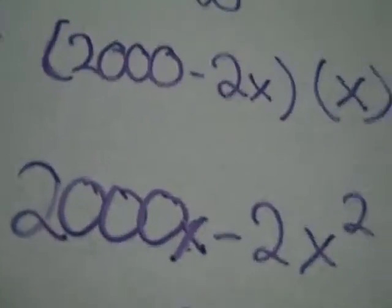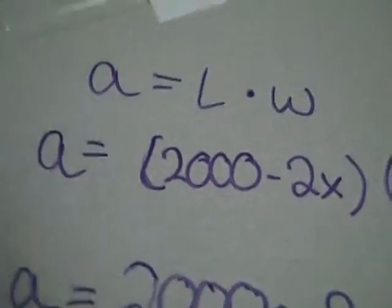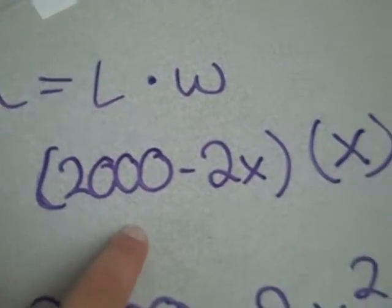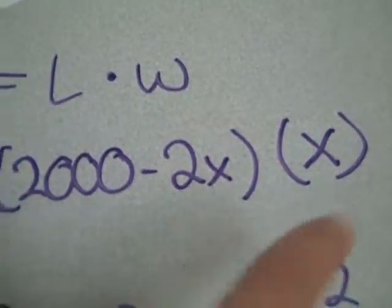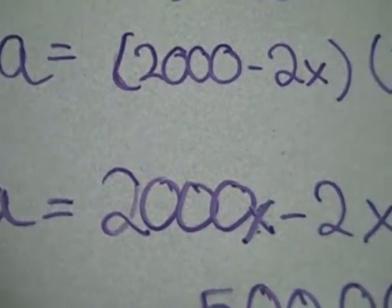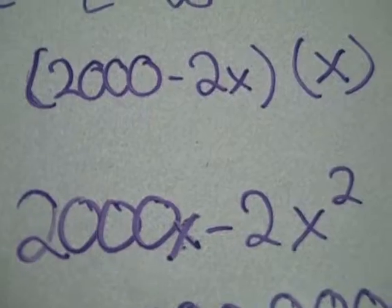Hi, I'm Cassidy, and I plugged those values into our area equation. So area is length times width, and the length is 2,000 minus 2x times the width, which is x. And you can distribute the x, and that ends up to be area equals 2,000x minus 2x squared.